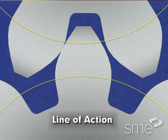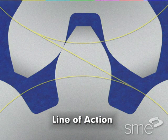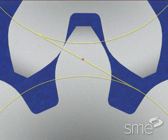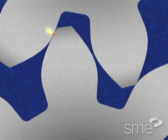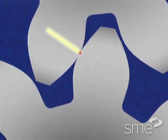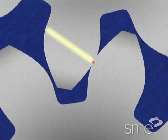The line of action is a straight line tangent to the base circles of mating gears and passes through the pitch point. The line of action is the path of contact of the two mating involute profiles as the gears rotate.